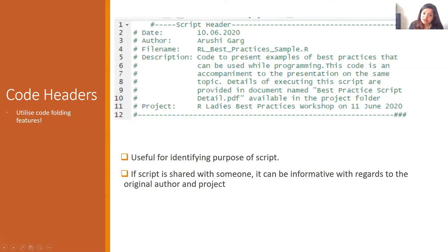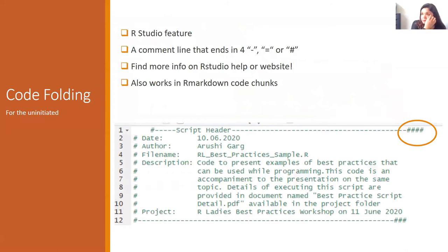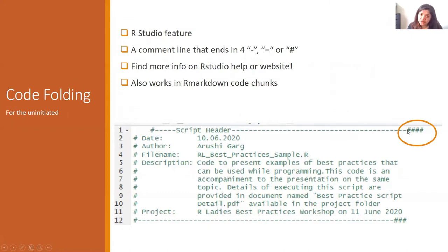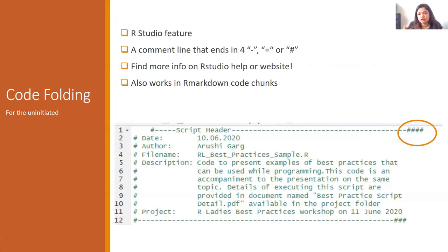There are other kinds of revisions that you will do, and we'll talk about those later. For code headers, but also for other sections of the code, something very useful in R Studio is code folding. Basically, whenever you write a comment which starts with a hash, you can have four hashes, hyphens, or equal signs at the end. Once you do that, you get this tiny downward arrow. You can click on that arrow, and all of the rest until the next code folding line would disappear, so you can scroll through different sections of the code really fast.